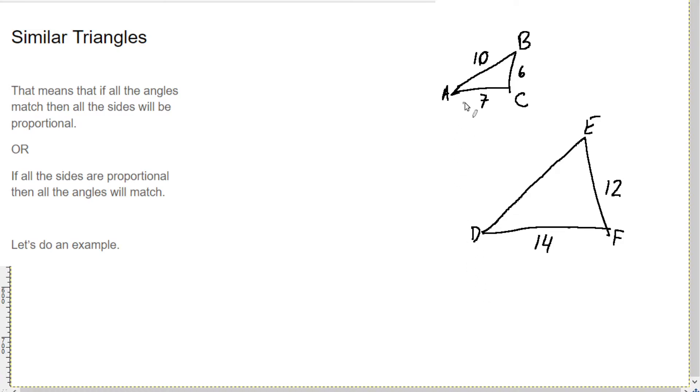So we'll do, let's do BC first because it's shorter. So we say BC divided by EF. So 6 divided by 12. And we get 0.5. Let's go AC compared to DF. So AC is 7. And DF is 14. And we get 0.5 as well.